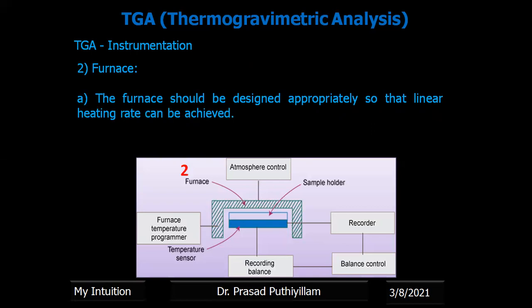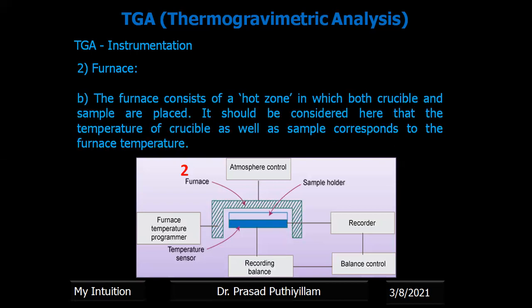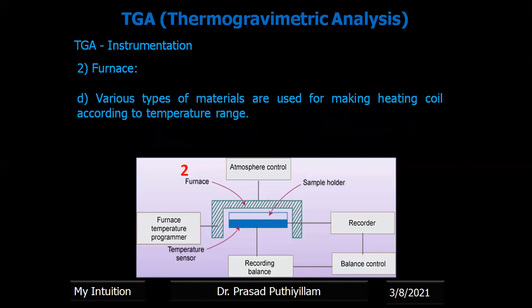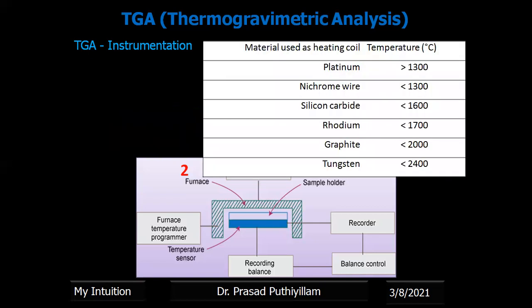The second component is the furnace. A furnace should be designed appropriately so that a linear heating rate can be achieved. The furnace creates a hot zone which includes the sample holder and the sample, and uniform temperature should be distributed to the sample. There are various types of heating coils used. Platinum can be used when the temperature requirement is below 1300 degrees Celsius. Then we can use nichrome wire, silicon carbide, rhodium, graphite, or tungsten.